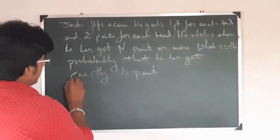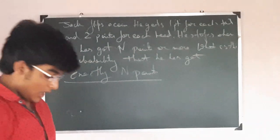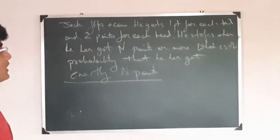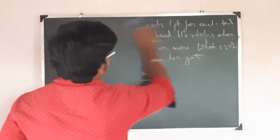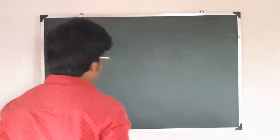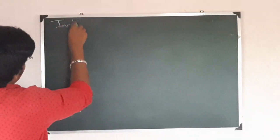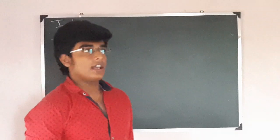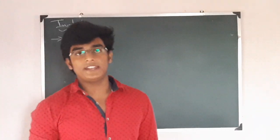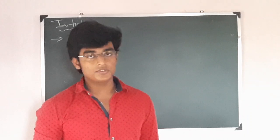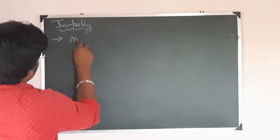Now how to solve this question? We will have to break the question into cases. We can say that initially Jack can get N number of tails to score N points, because each tail scores 1. So N number of tails gives you N points.